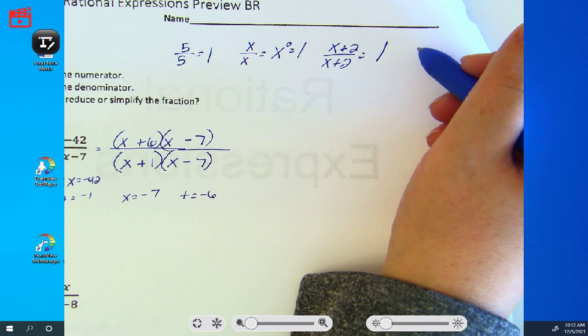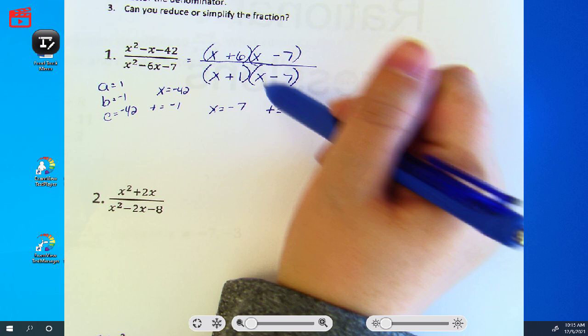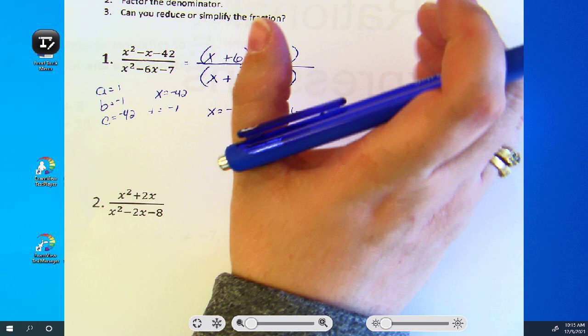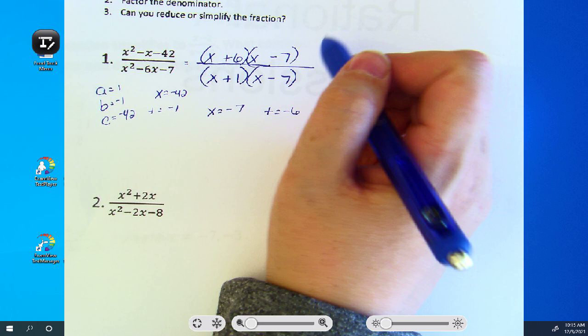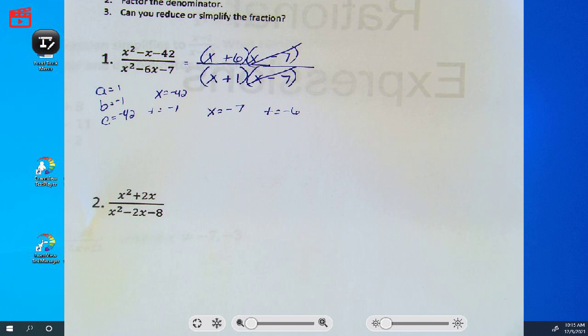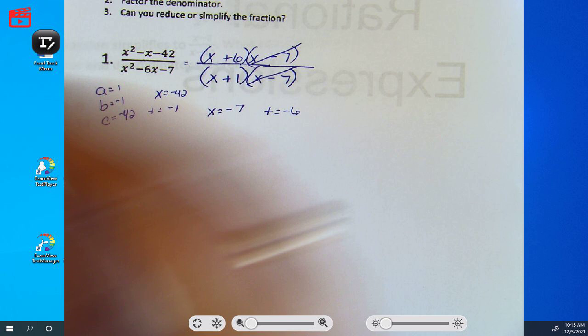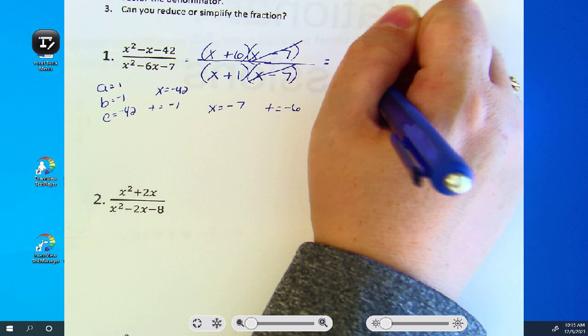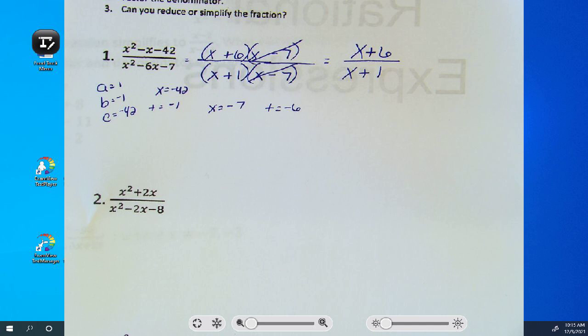So, in this problem, do you see a factor in the numerator and the same factor in the denominator? The x minus 7. So when I divide these out, they cancel out and make 1. What we're doing is we're taking out common factors to simplify the fraction. So what's left is x plus 6 over x plus 1.